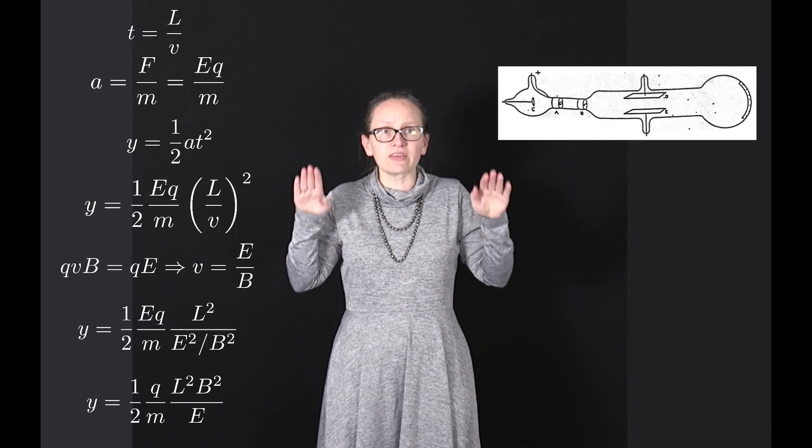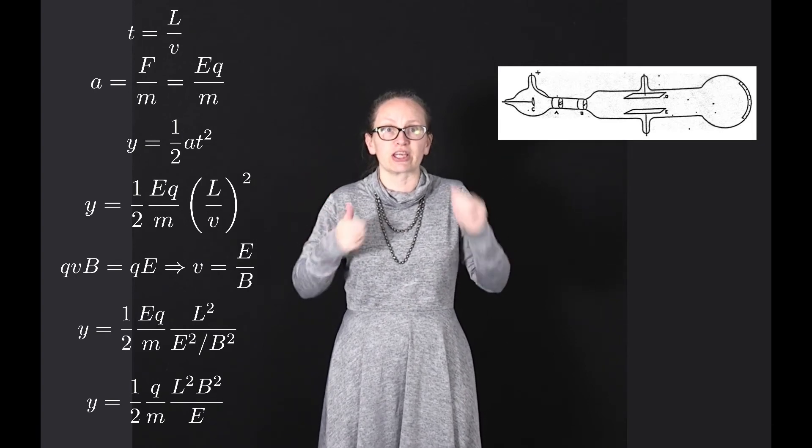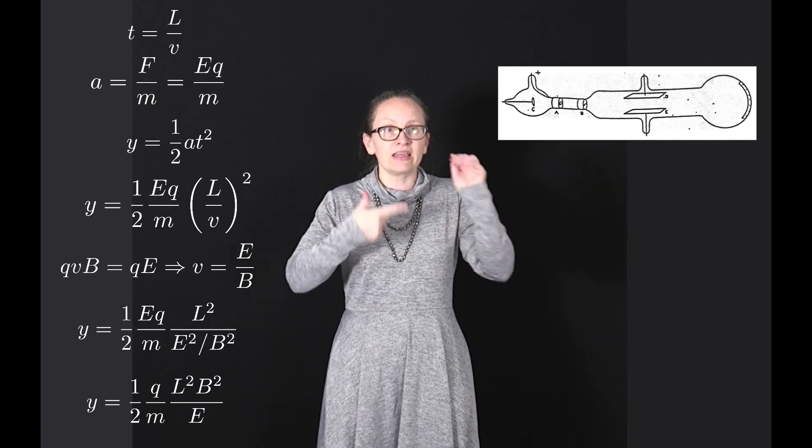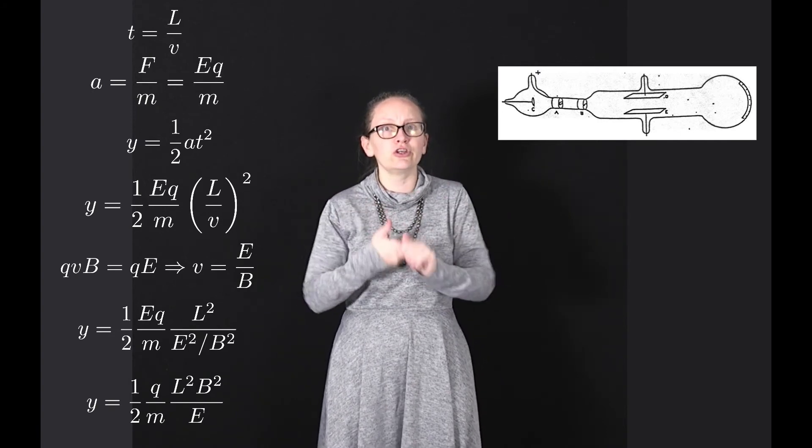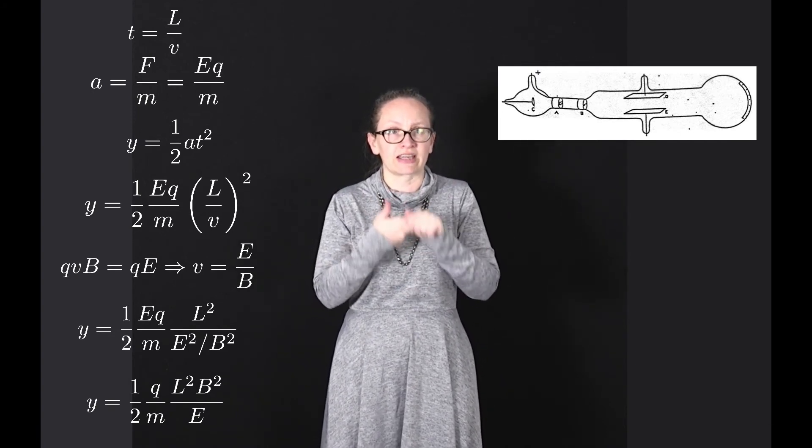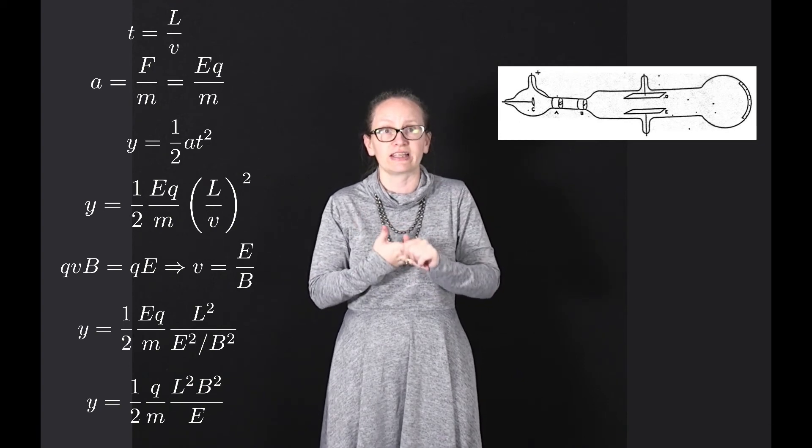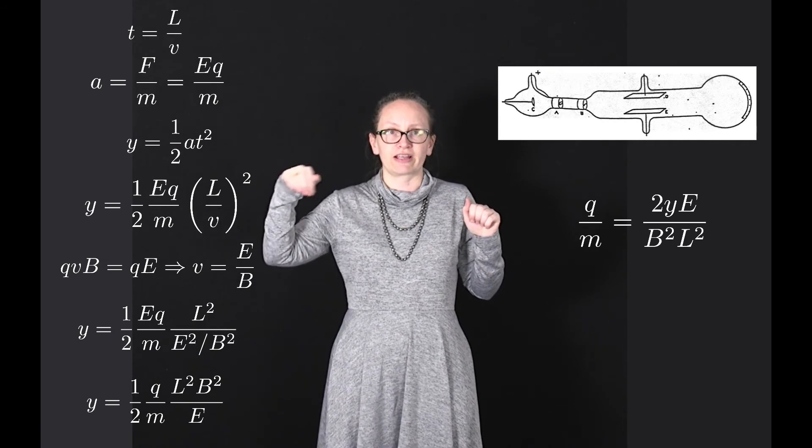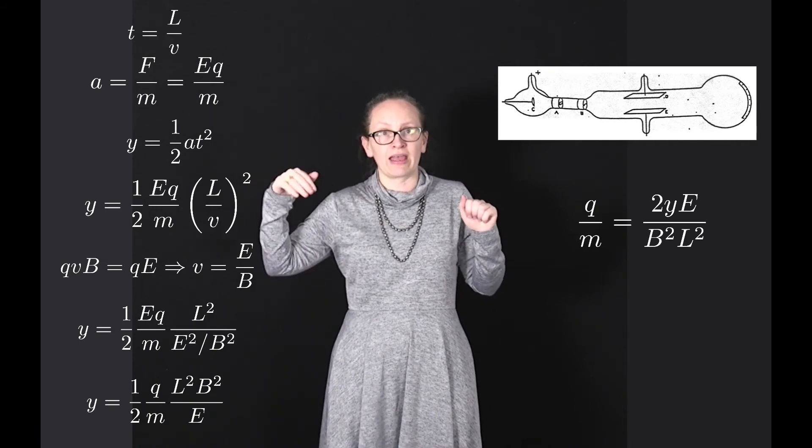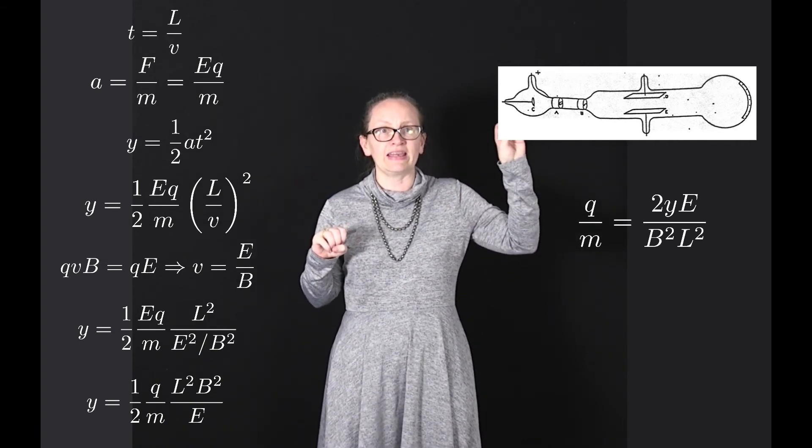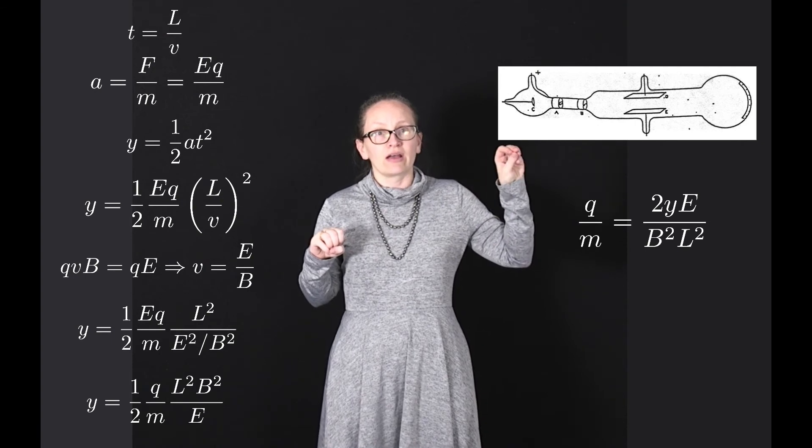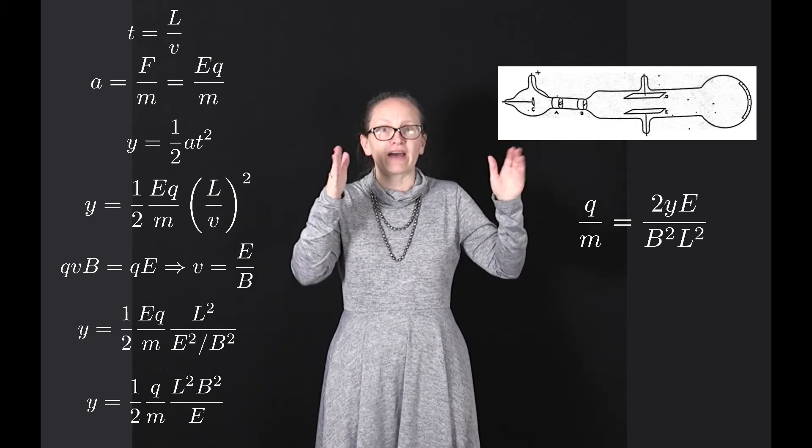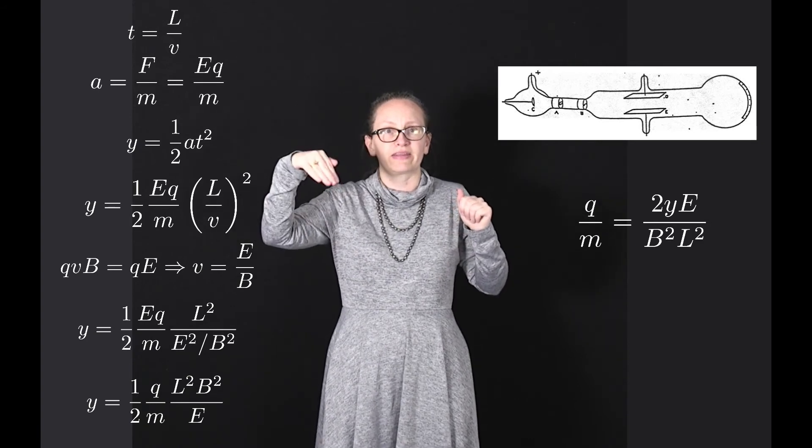Most of the things in this equation he could measure. He could measure the deflection of the electron as it passed between the plates. He knew the length of the plates. He knew what magnetic field was needed to cancel out this deflection, and he knew the electric field. He could rearrange this and write that the charge divided by the mass, or q over m, equals 2yE divided by B squared L squared. All these things were known, so he could get a value for charge divided by mass.